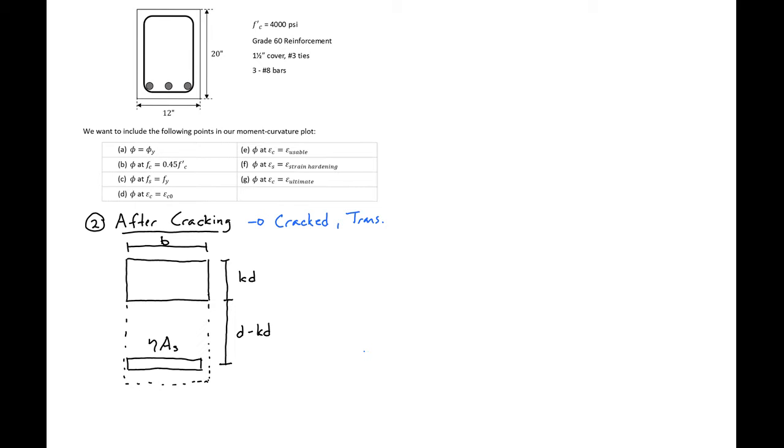We'll use the cracked transformed section properties and the section shown underneath. Essentially we'll only consider the concrete that's in compression with a height of kd and a width of b, and the steel that's in tension with the transformed steel, n times As. The first thing we can do is calculate our depth of kd.